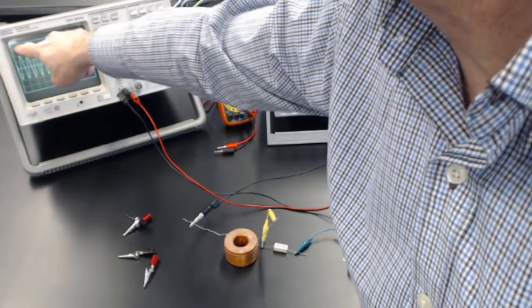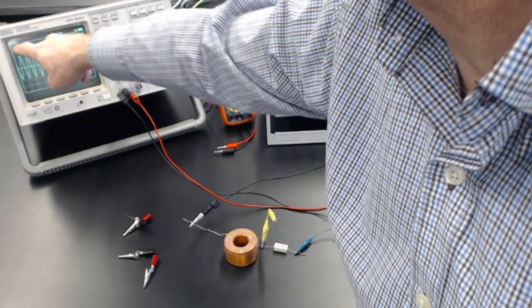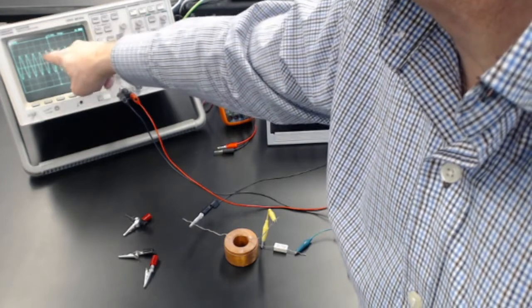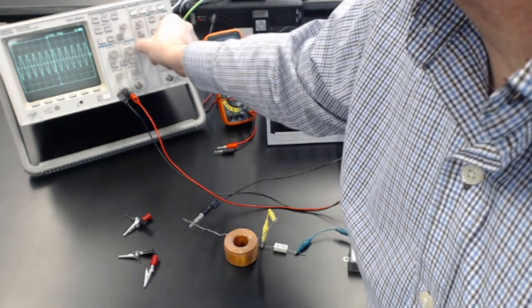It tells me in the upper left corner what the scale is. In this case, it's 500 millivolts per square. I can also change the time divisions.